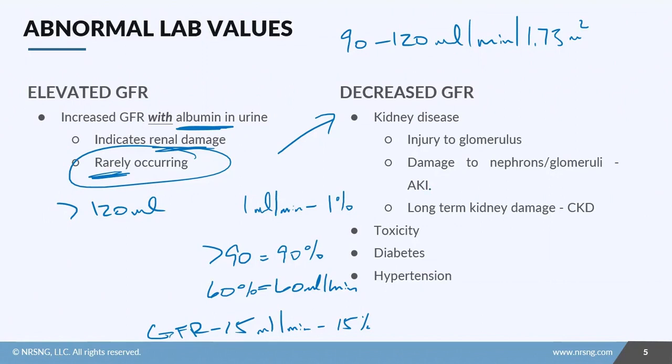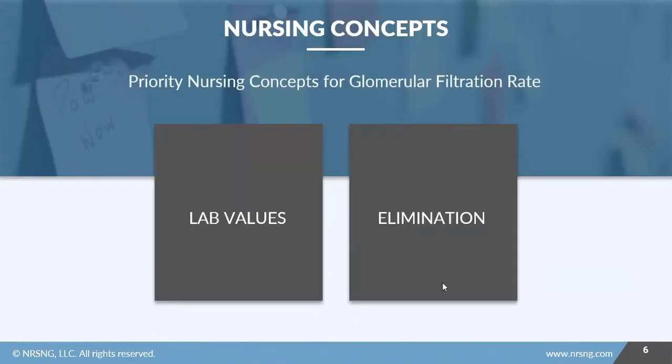But what you need to do is you need to talk to your providers about what their goals are when you're talking about your GFR, and it also depends on how chronic their disease is. So things that will cause a decreased GFR: you've got kidney disease, so injury to the glomerulus. Also if you have damage to the nephrons or the glomeruli, it could be indicative of something like an acute kidney injury, long-term kidney damage like chronic kidney disease. If you have toxicity, diabetes, or even hypertension, all of these will decrease your GFR.